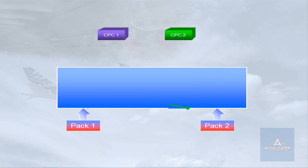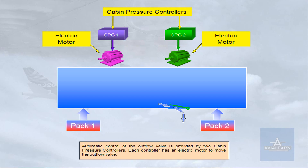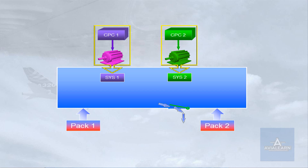Automatic control of the outflow valve is provided by two cabin pressure controllers. Each controller has an electric motor to move the outflow valve. A controller-motor combination is known as a system. Only one system will operate at any one time, with the other system acting as backup.